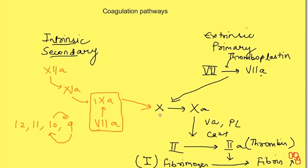At the level of factor 10, these pathways have converged. The pathway from factor 10 to further steps is known as the common pathway because it is common to both intrinsic and extrinsic pathways.